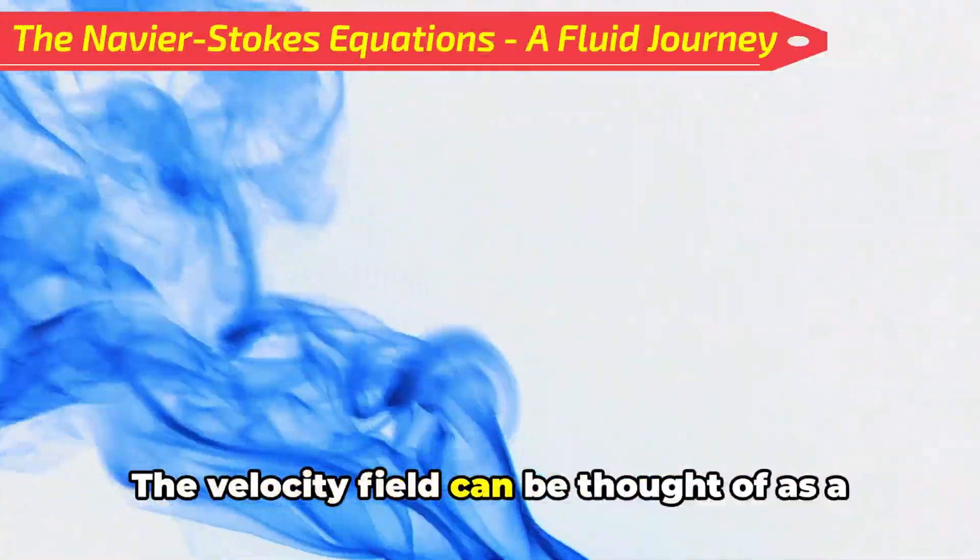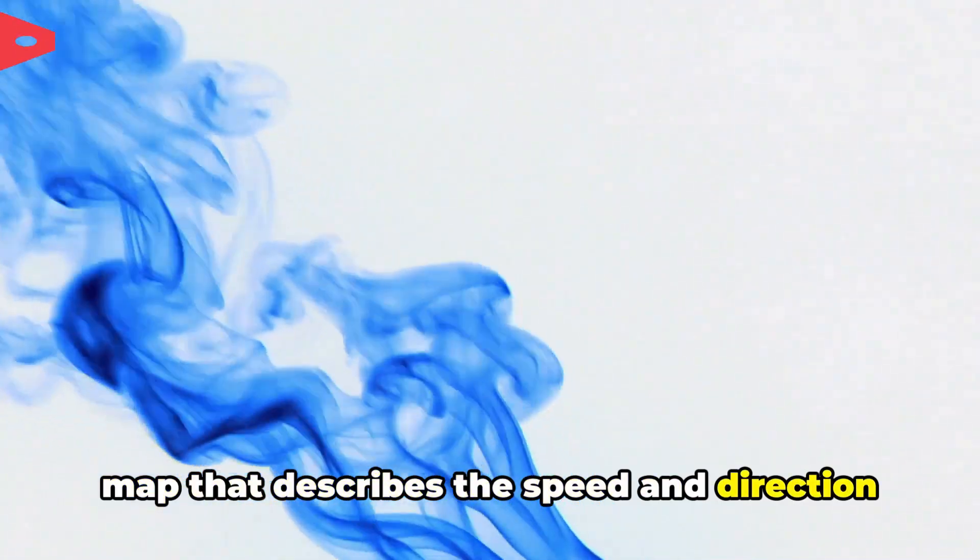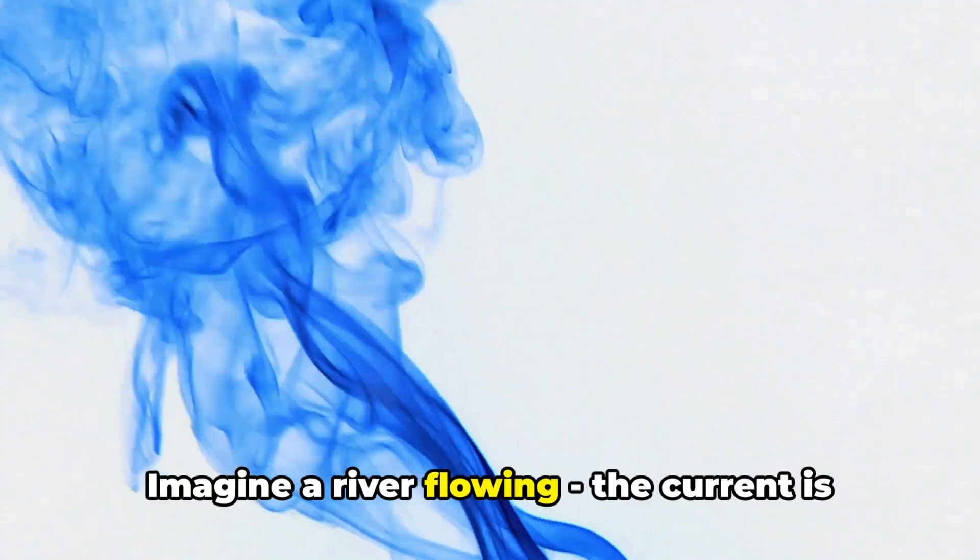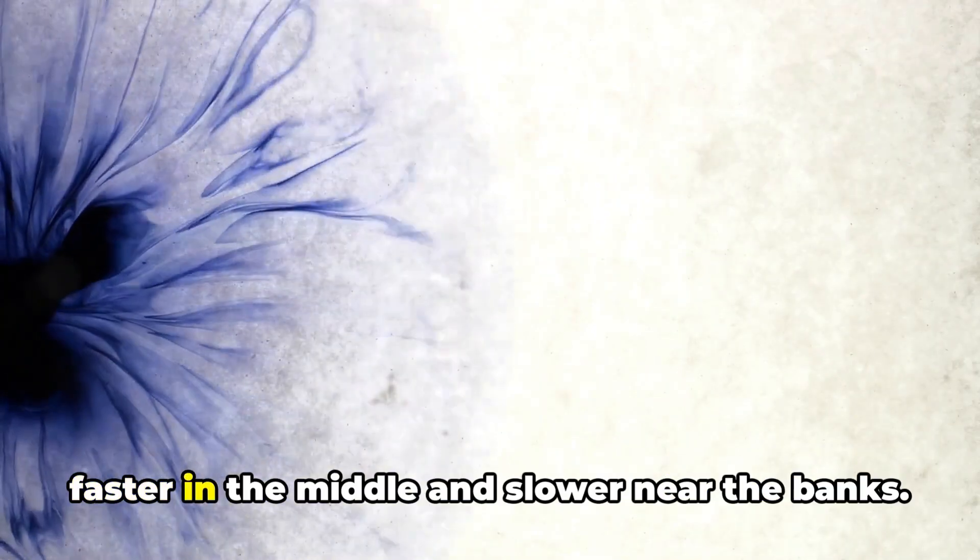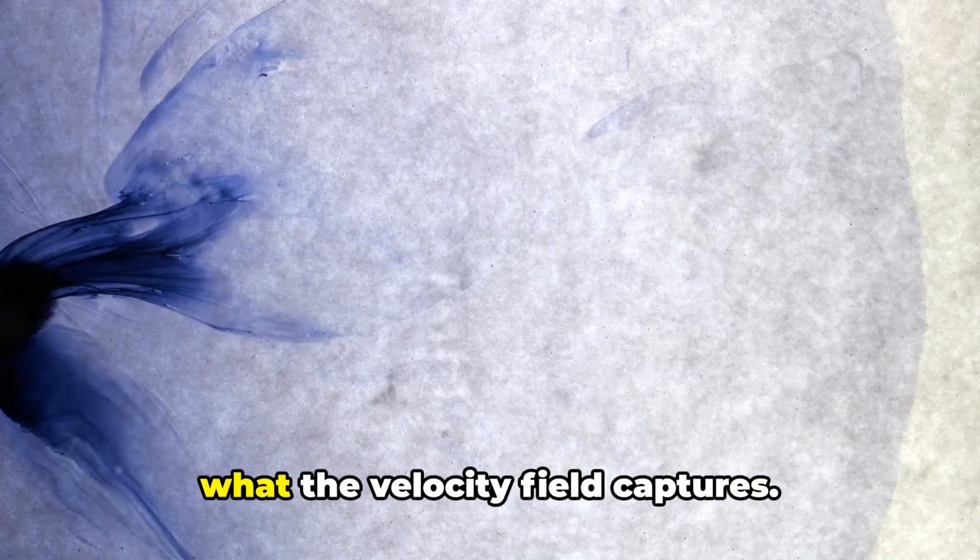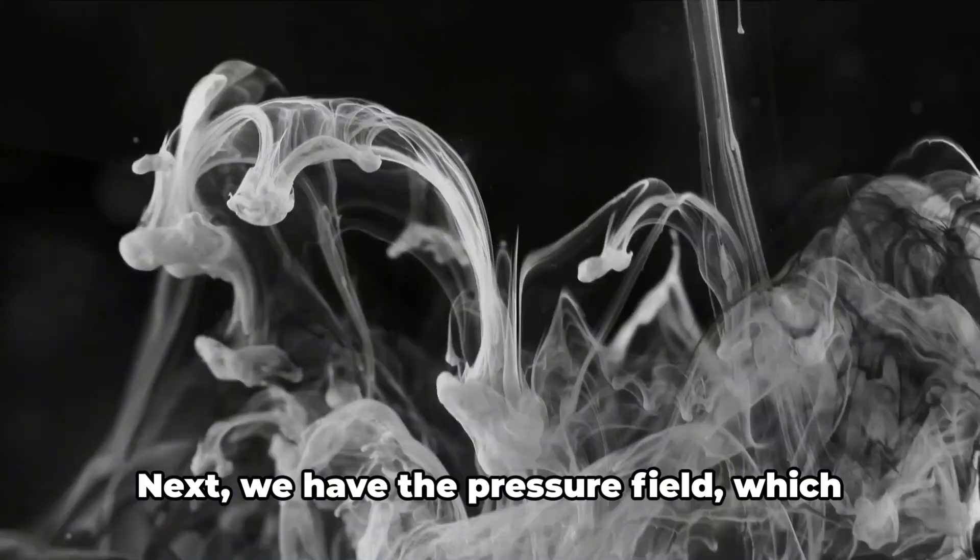The velocity field can be thought of as a map that describes the speed and direction of the fluid at every point. Imagine a river flowing. The current is faster in the middle and slower near the banks. This variation in speed and direction is what the velocity field captures.